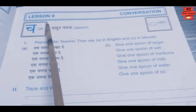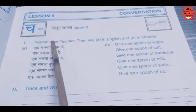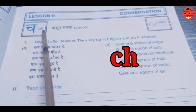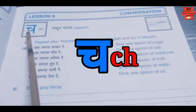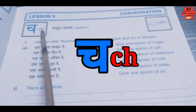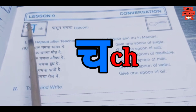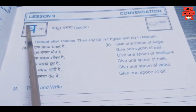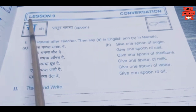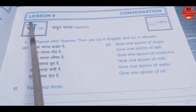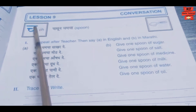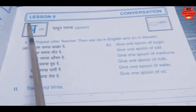Now let's do lesson number 9 — the conversation based on Chh-Akshar. C and H together sound as Chh. How to write Chh? One small sleeping line, take a curve, go up, come down, and a sleeping line. One small sleeping line, take a round from here, go up, come down, and sleeping line.